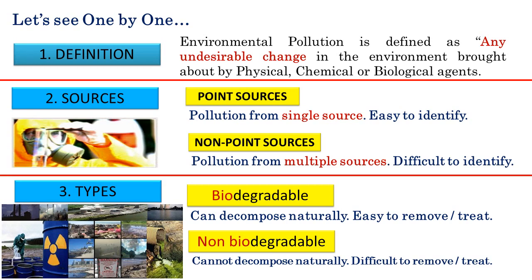Such sources are called non-point sources of pollution. The third important description for any kind of pollution is types, which differ from pollution to pollution. However, the most important classification of pollutants is into two types: biodegradable and non-biodegradable. Biodegradable pollutants are easy to remove or treat from a polluted environment since they can decompose naturally. Non-biodegradable pollutants are not so easy to remove and persist for a much longer time — plastic bags and heavy metals are very important examples of non-biodegradable pollutants.